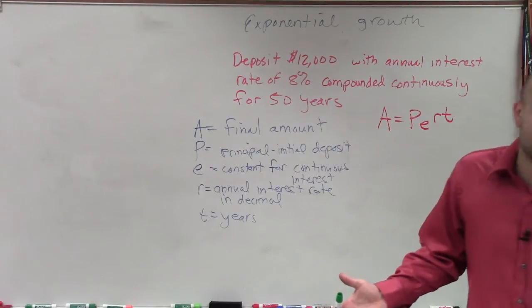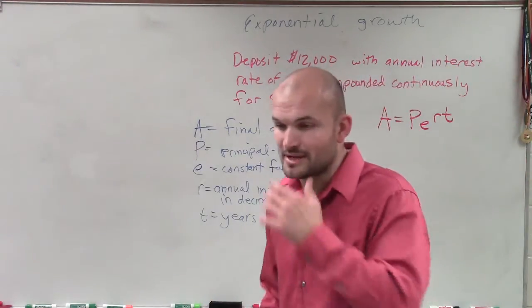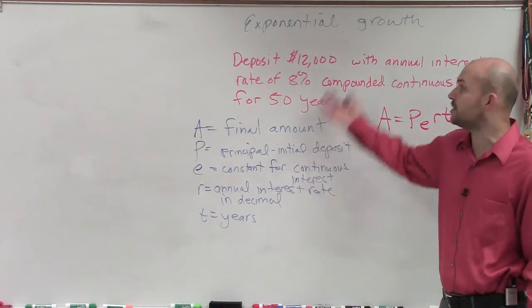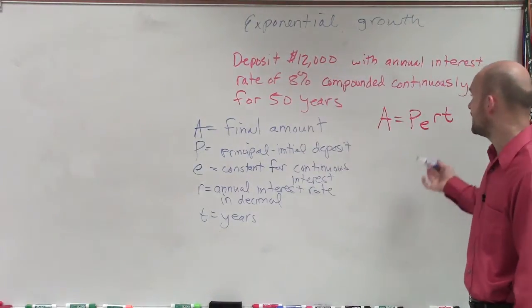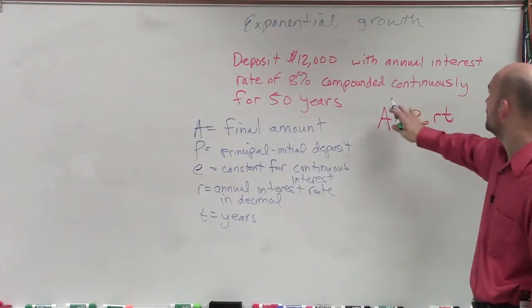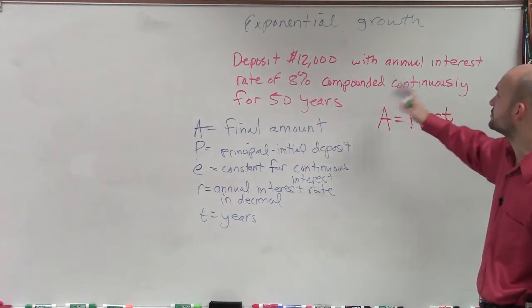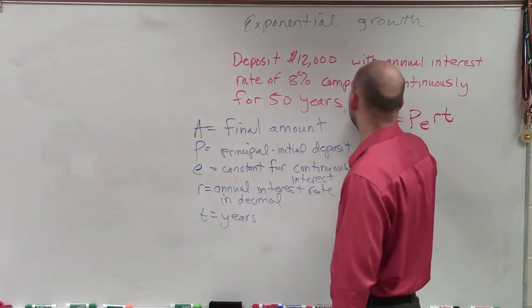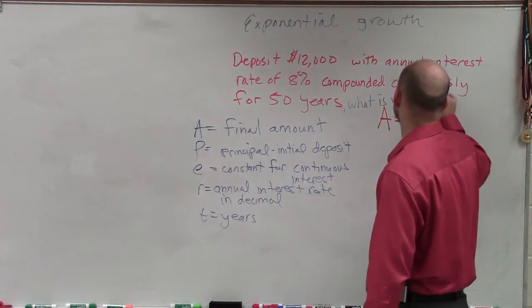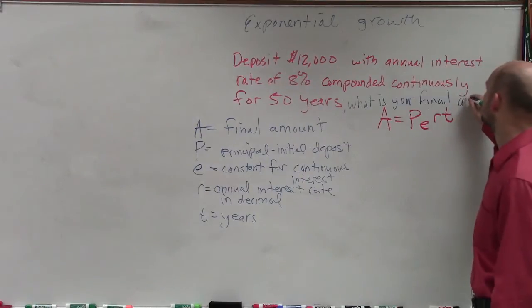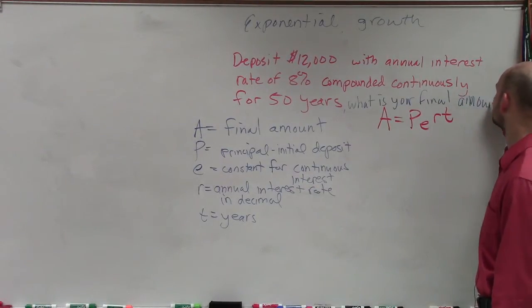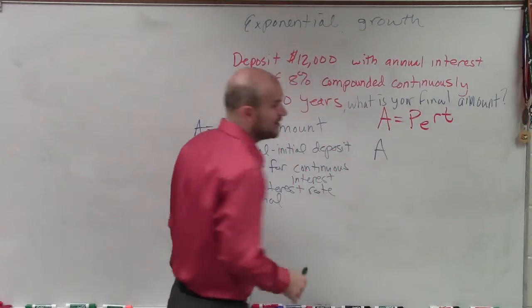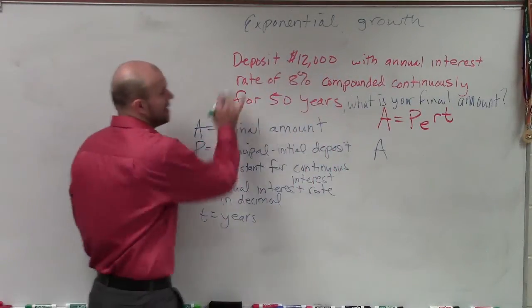So ladies and gentlemen, all we're doing with these is you're obviously going to want to make sure you use your calculator. All we're doing is plugging in the information we know from the problem. It says you made a deposit of $12,000 with an annual interest rate of 8% compounded continuously for 50 years — what is your final amount? We don't know what A is, so A remains a variable. P is our initial amount, which is $12,000.